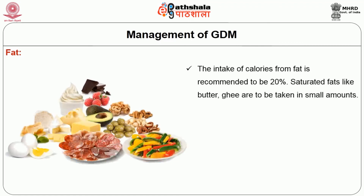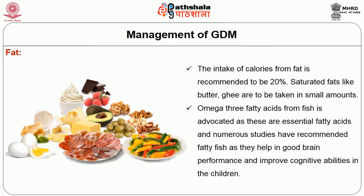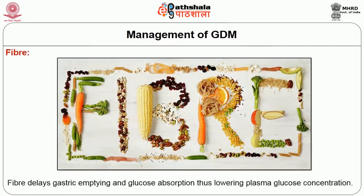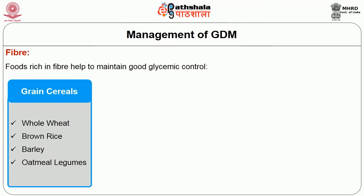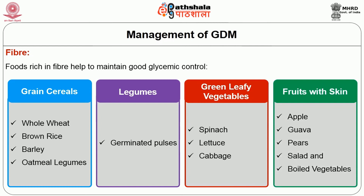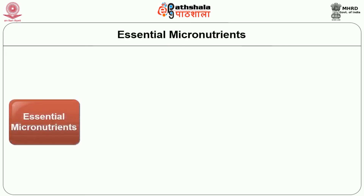Our next nutrient is fat. The intake of calories from fat is recommended to be 20%. Saturated fats like butter and ghee are to be taken in small amounts. Omega-3 fatty acids from fish are advocated because these are essential fatty acids, and numerous studies have recommended fatty fish as they help in good brain performance and improve cognitive abilities in children. Regarding fiber, it delays gastric emptying and glucose absorption, thus lowering plasma glucose concentration. Foods rich in fiber help to maintain good glycemic control, and hence whole grain cereals like whole wheat, brown rice, barley, oatmeal, and legumes like germinated pulses, green leafy vegetables like spinach and lettuce, and salad and boiled vegetables are advised.